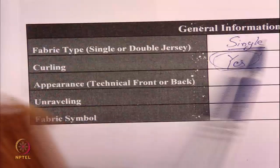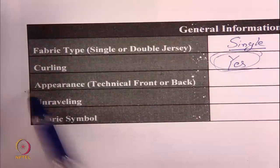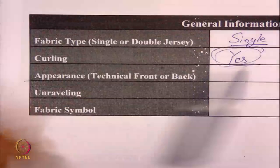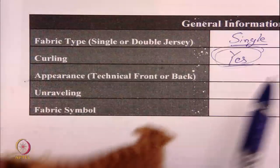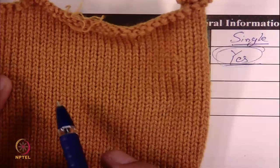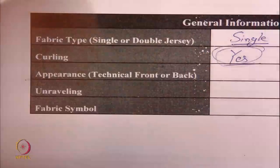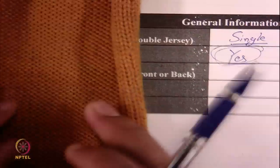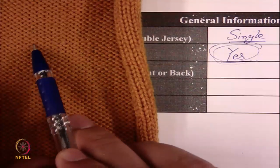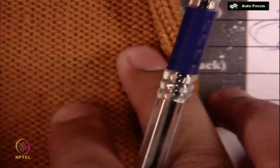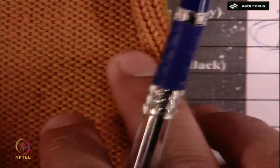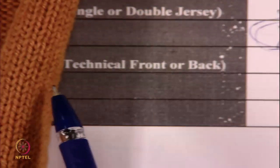The third thing is the appearance — can you identify technical front and back? In technical front, you can only see the leg side. For this single jersey fabric, on the technical front you can see the legs, and on the technical back you can see only the head and sinker part.